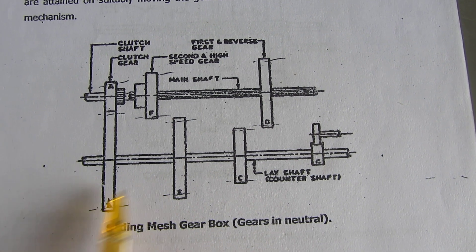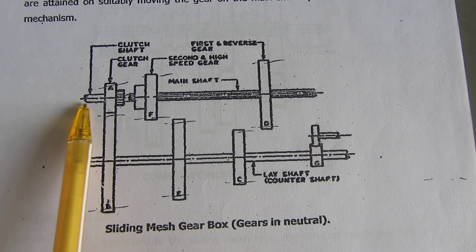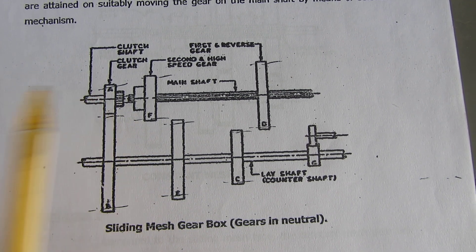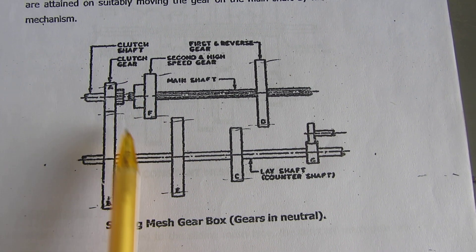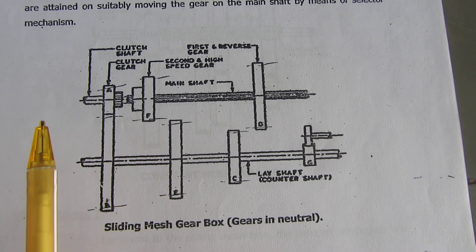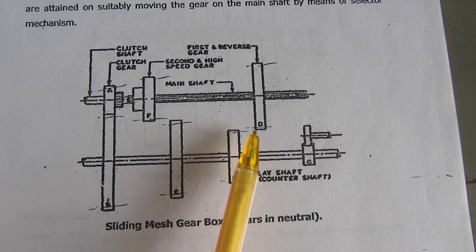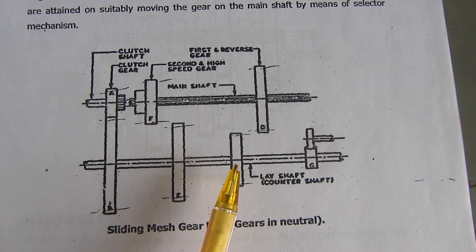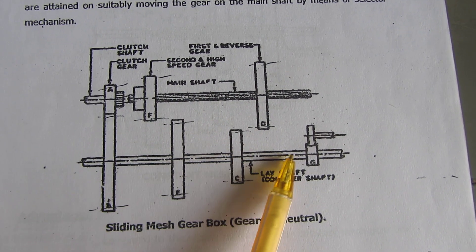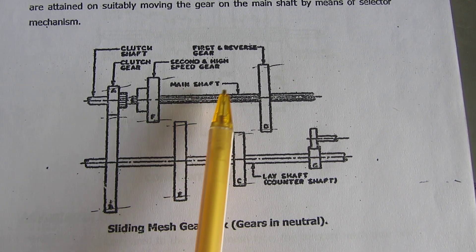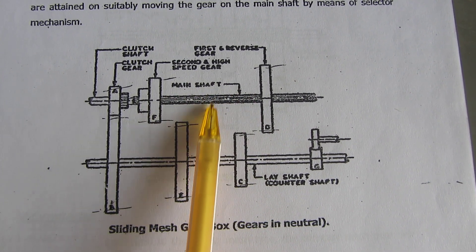Let's see the construction. This is a clutch shaft that comes from the flywheel, or we can say clutch gear. These gears are permanently engaged. This is the layshaft. The layshaft has gears, and the main shaft has gears. Layshaft gears rotate with the shaft.